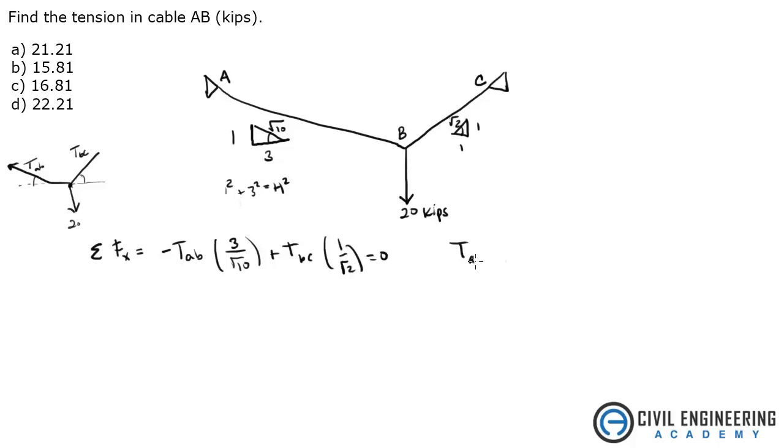And you get tension AB. Well, we want it in terms of BC, since that's what we're going to end up solving for. But tension AB equals 0.745 tension BC.